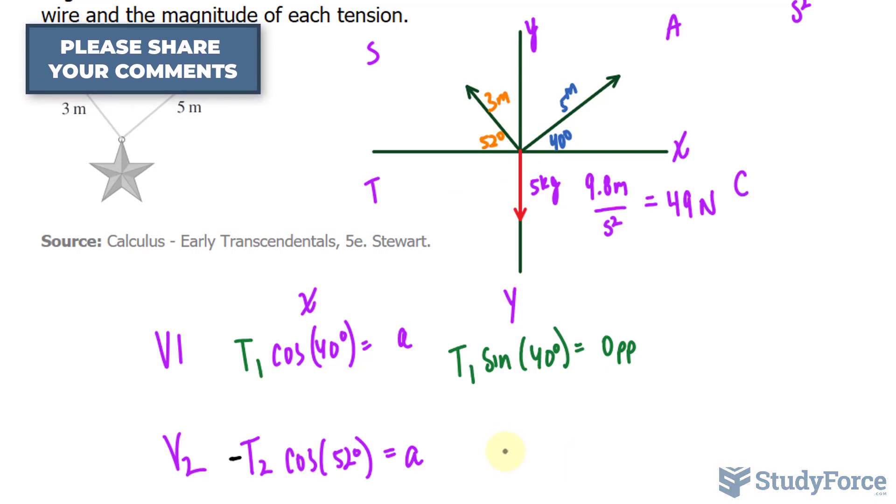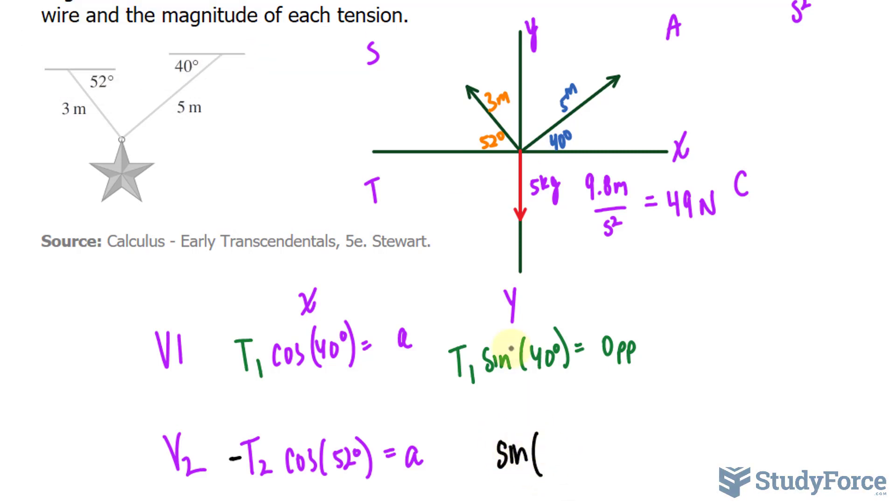For the y component, we use sine, and sine is always positive in this quadrant, so we don't have to worry about changing its symbol. That's T2, and that is equal to the opposite, or the y component.